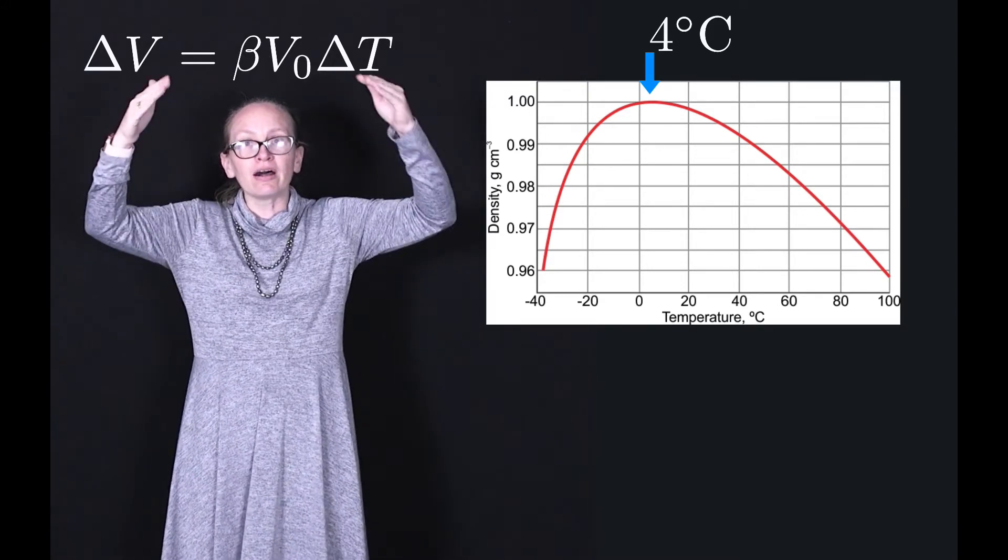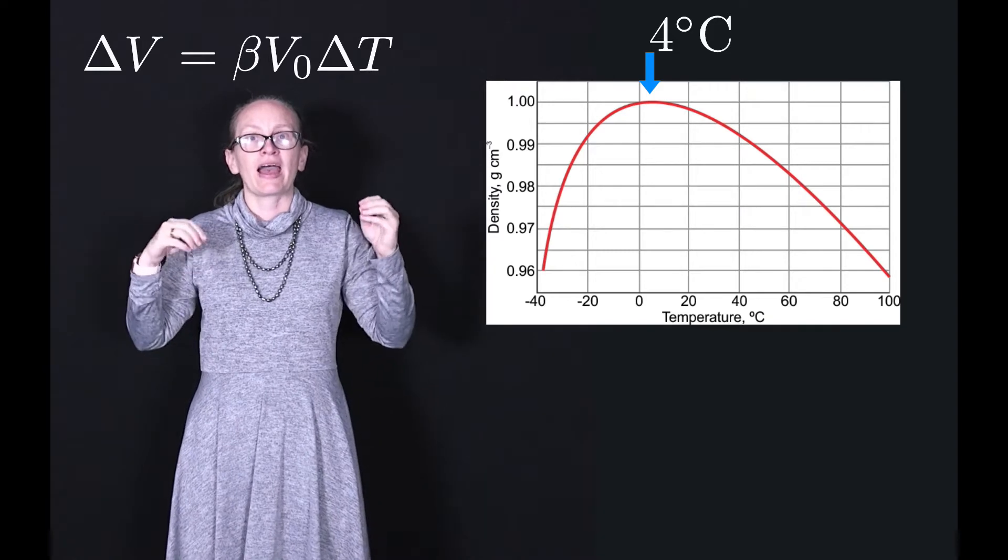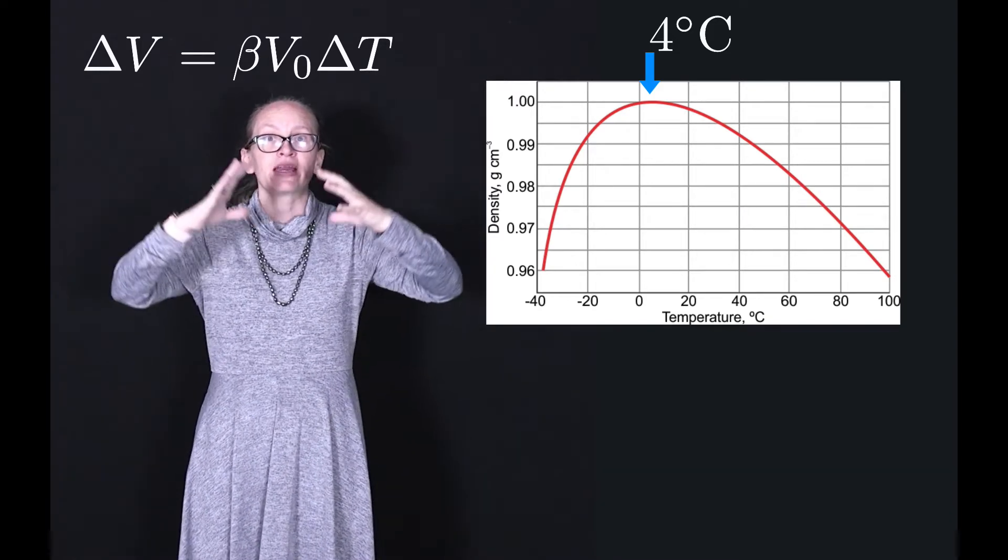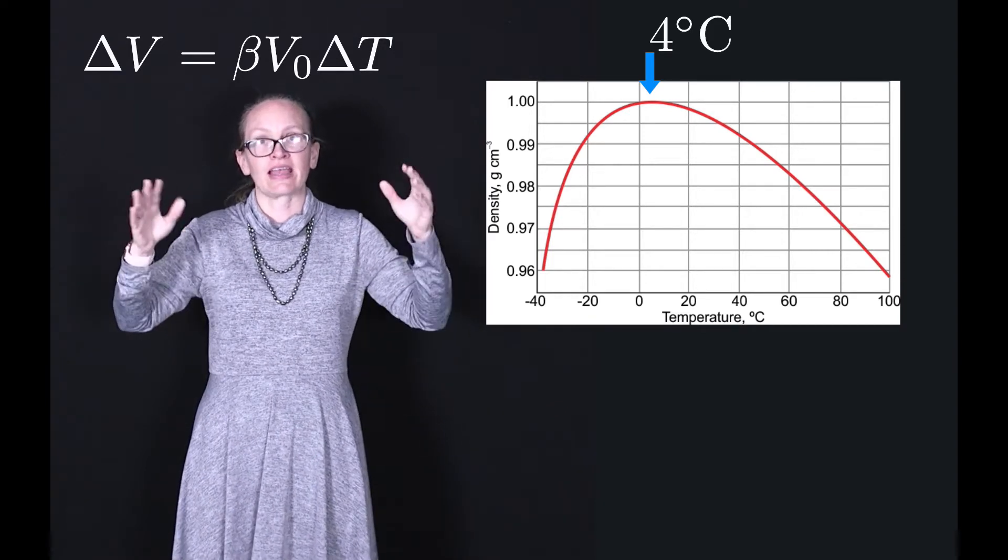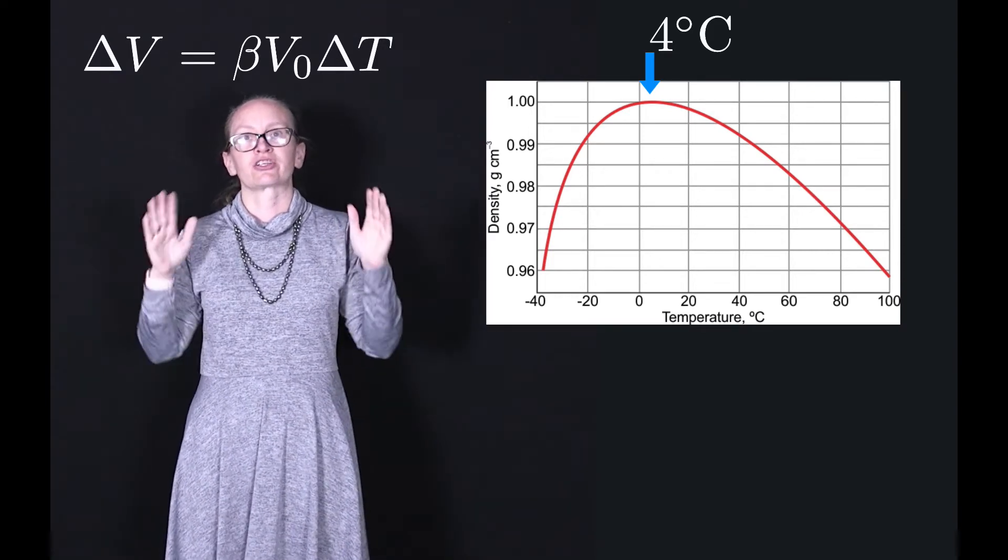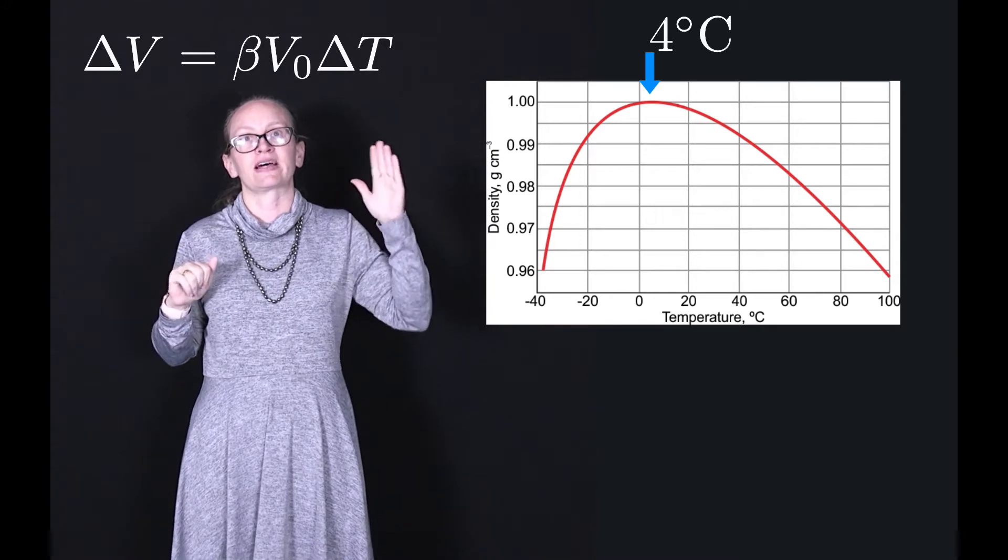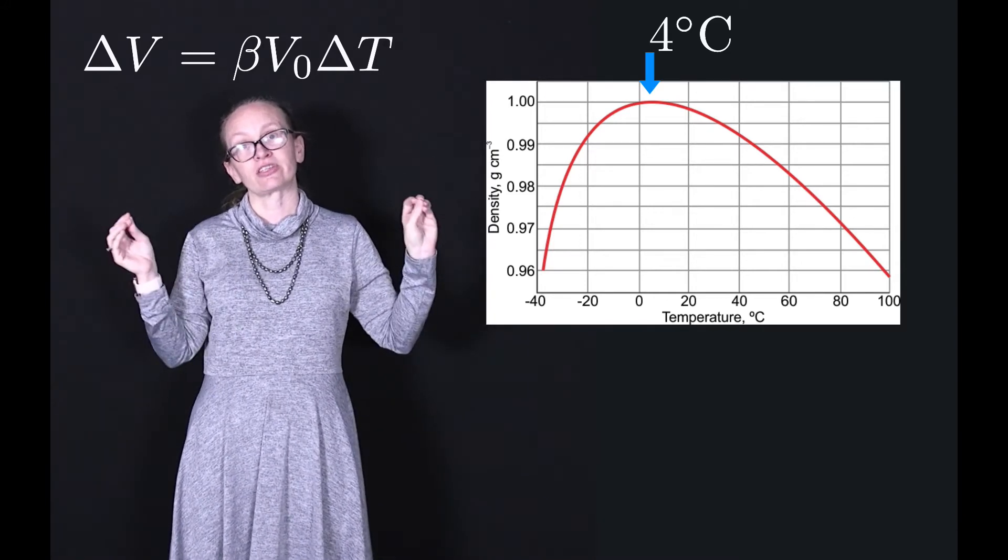So above 4 degrees C, as water increases its temperature, it expands, and so it becomes less dense. Just like the equation delta V is equal to beta times V0 times delta T tells us.